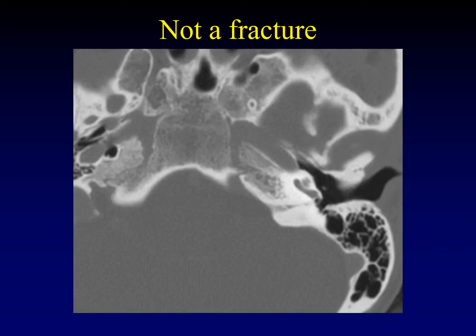Here's another normal structure not to mistake for a temporal bone fracture. This lucent line runs parallel to the internal auditory canal, slightly more inferior but along about the same course. This is the cochlear aqueduct, heading toward the basal turn of the cochlea. Like the vestibular aqueduct, it helps recycle endolymph and perilymph. This is a normal anatomic structure, not a fracture.